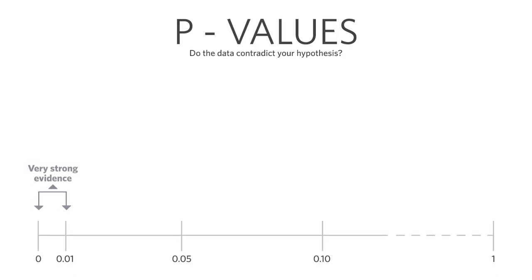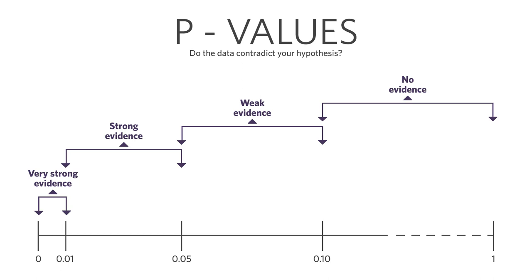Here are p-values. They range from 0 to 1, and generally we're walking in with the hypothesis that two things are the same or that there's no effect. If you get a very low p-value — below 1% — we say this is very strong evidence from the data that your hypothesis is incorrect. A p-value between 1% and 5% is strong evidence. Between 5% and 10% is weak evidence that the data is contradicting you. And if you get above 10%, there's just no evidence in the data to contradict your initial belief.